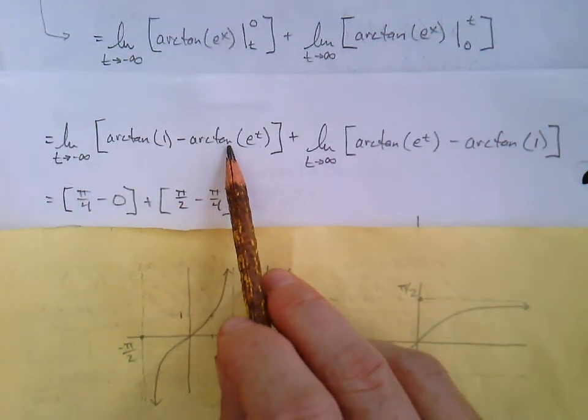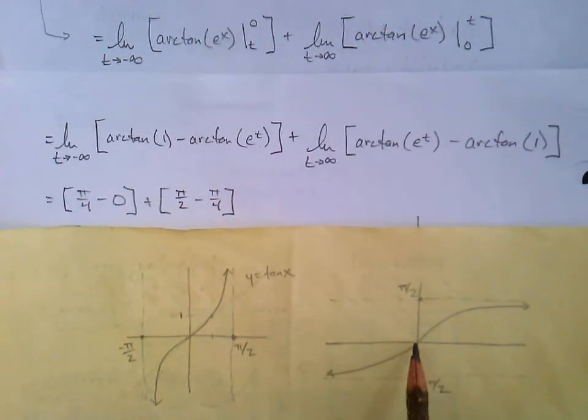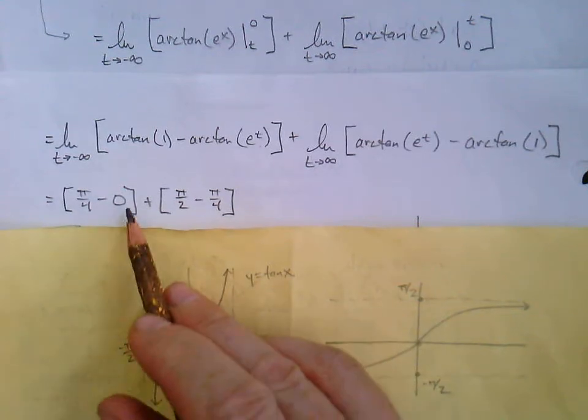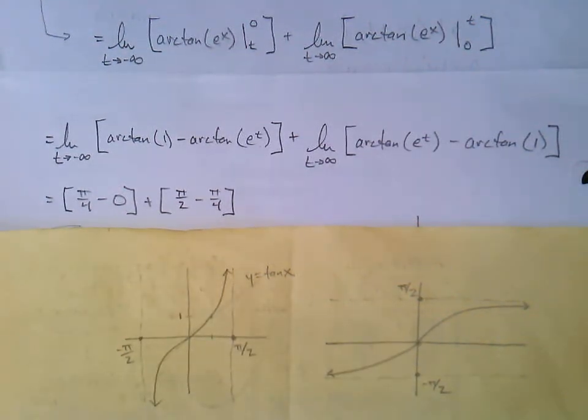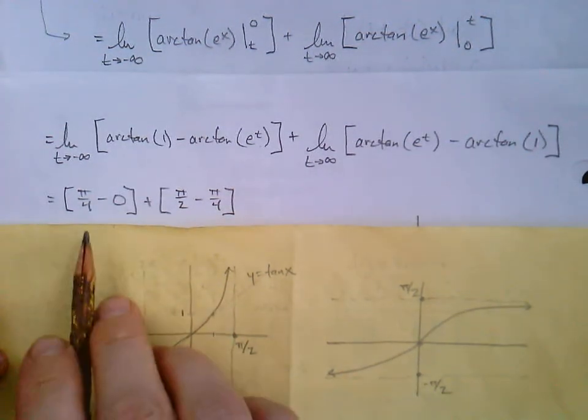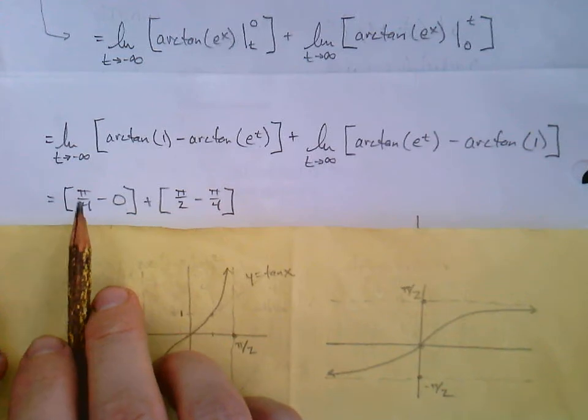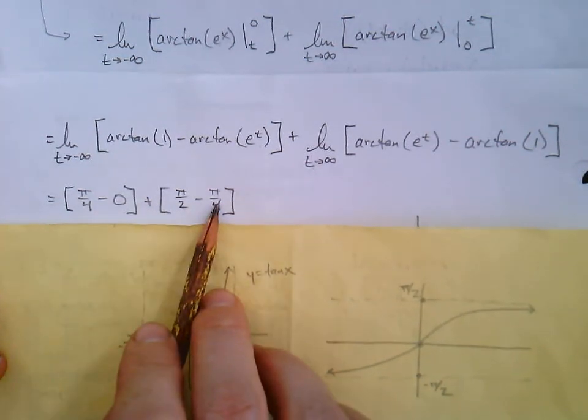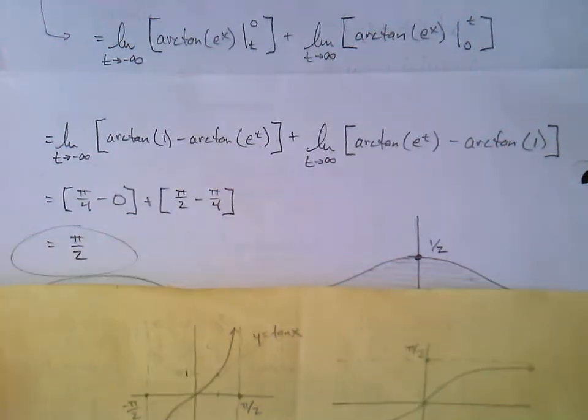So there's our arctangent e to the t, as t approaches infinity, pi over two. And we could even explain this one. Arctangent of zero is zero. Sometimes exploring with a graph for some of these things is helpful. Definitely in this case. Not always. Well, we just got to clean this up. Pi over four minus pi over four. Will those cancel? Our answer is simply pi over two.